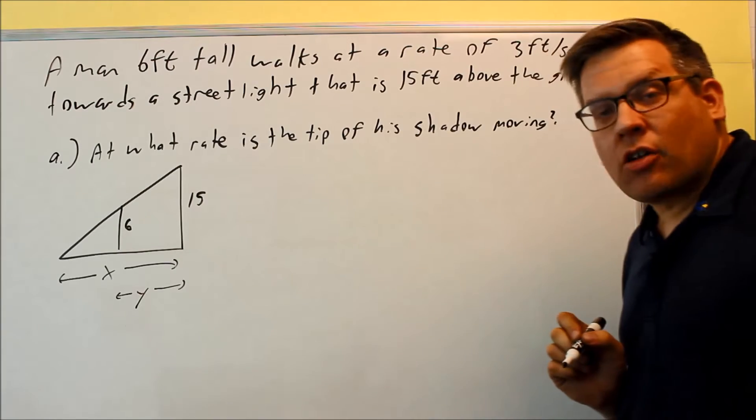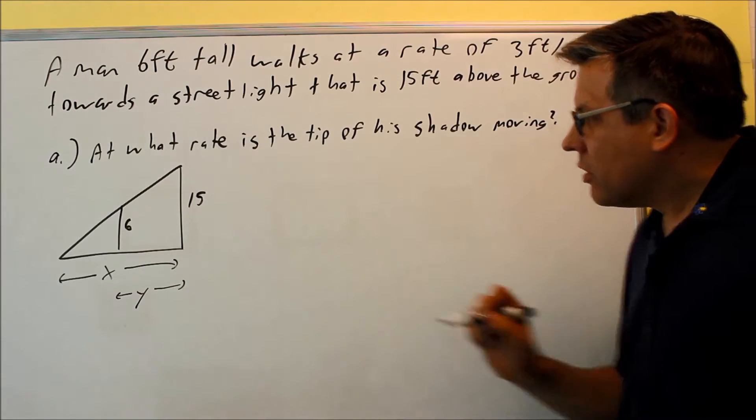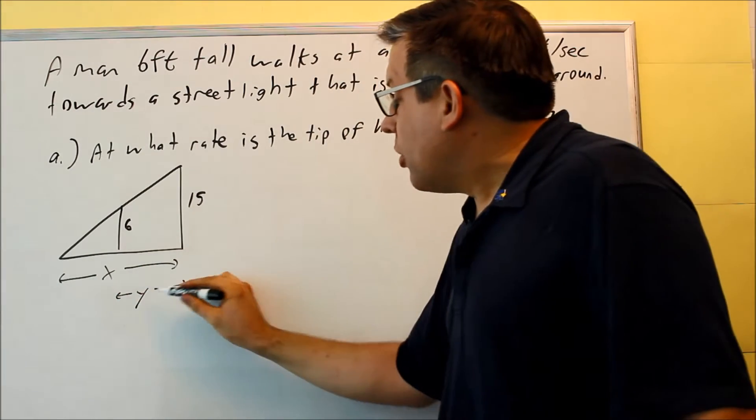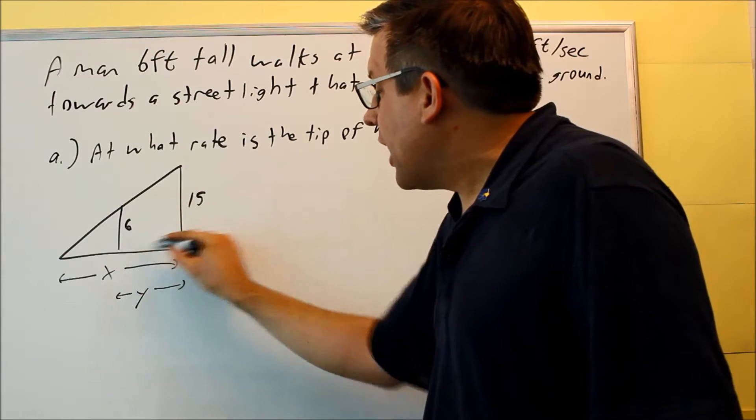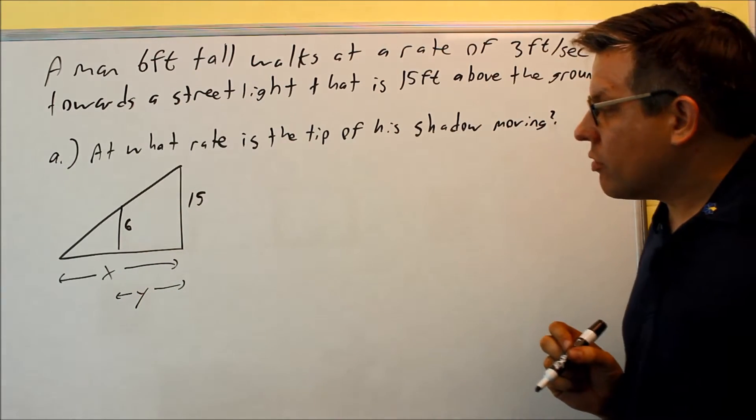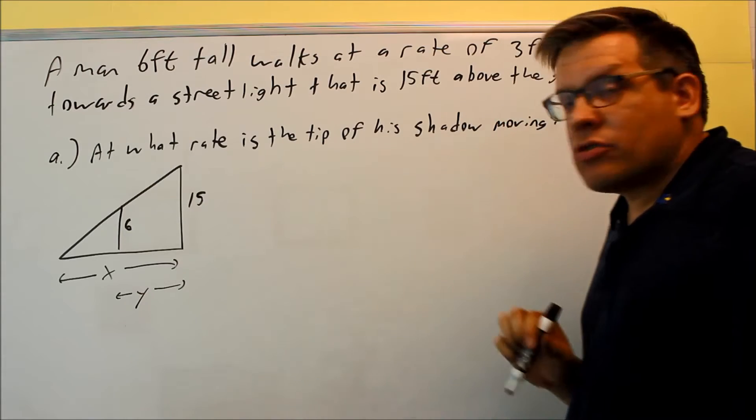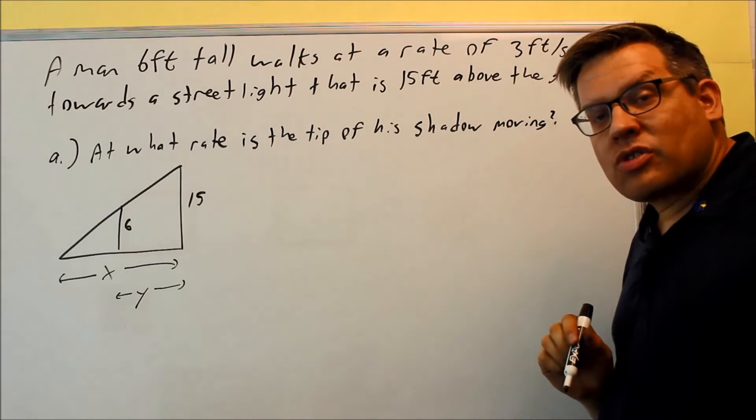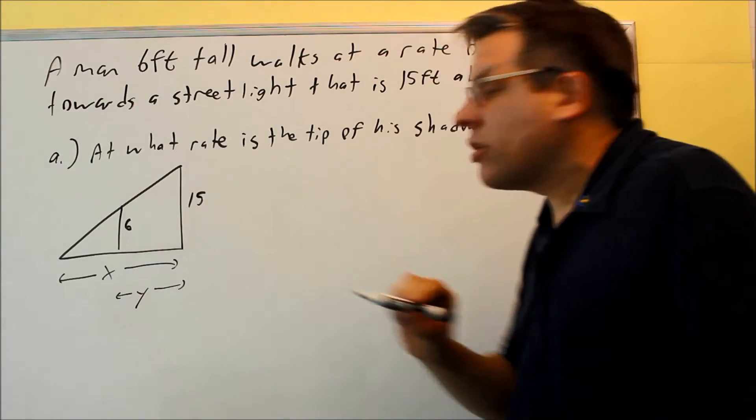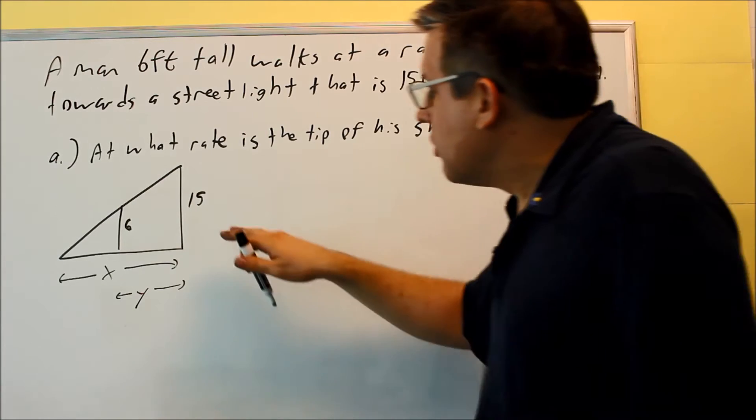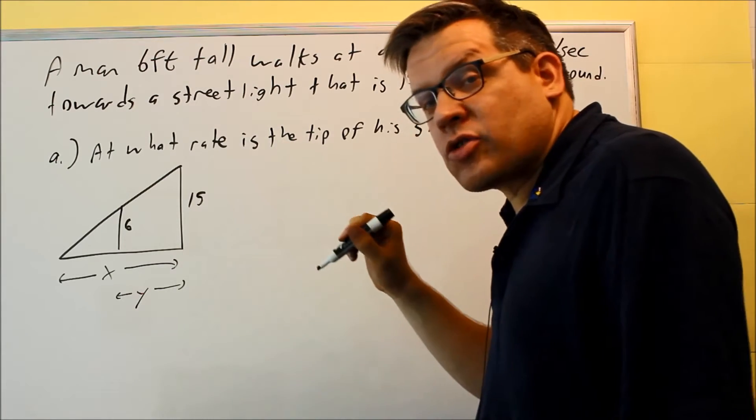So the y is not going to be a shadow length. Basically, x is a shadow length but y is going to be the distance from the man to the street light there. And then because I have this kind of drawing, this is going to involve similar triangles. When you have a triangle inside a triangle, you need to use similar triangles in order to set that up.